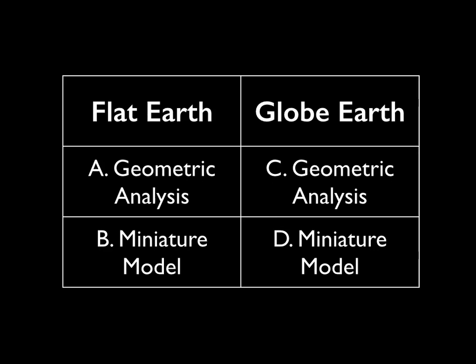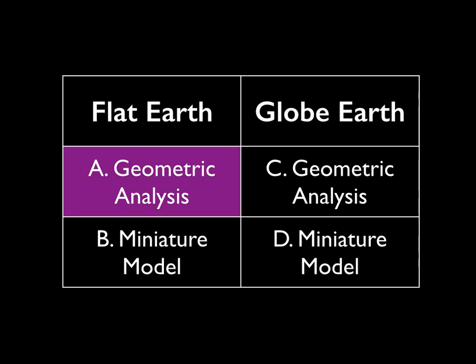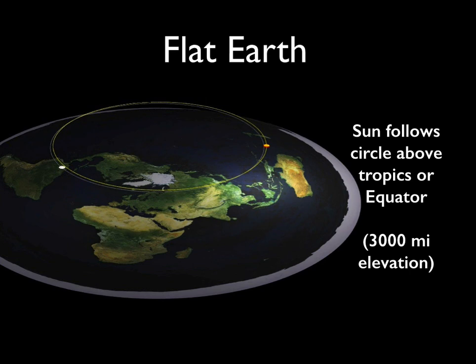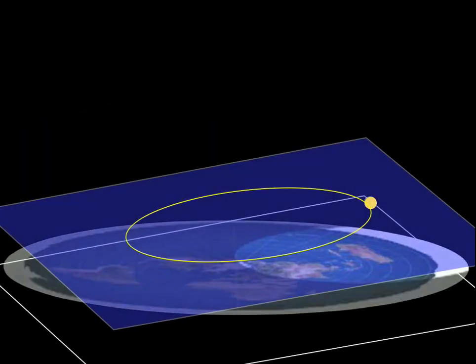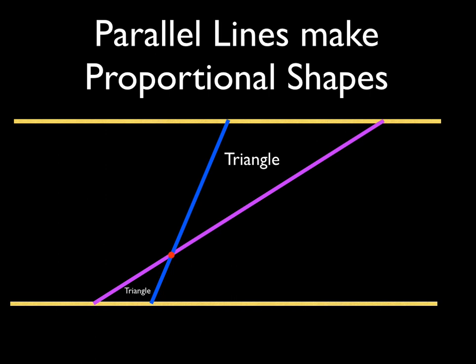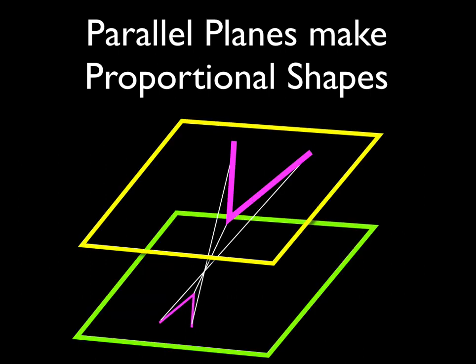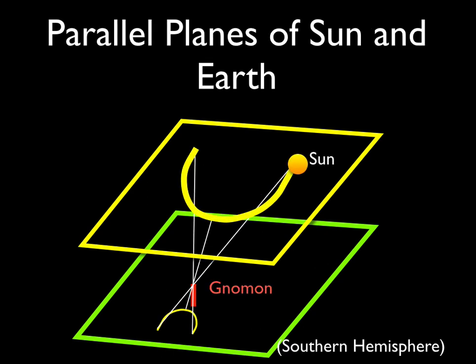Starting with a geometric analysis of the flat-earth shadow stick sundial: on the flat Earth, the Sun is tracing a path in a plane parallel to the plane of the Earth. From geometry, parallel lines make proportional shapes, and the same works with parallel planes. So if you have a little gnomon and use the tip of the gnomon as a pivot point, whatever path the Sun takes in the sky will be mirrored exactly on your shadow stick sundial base.